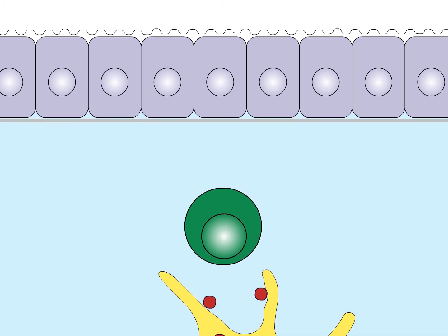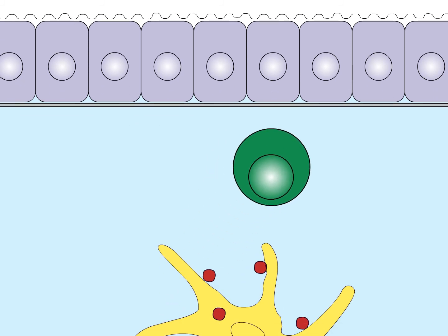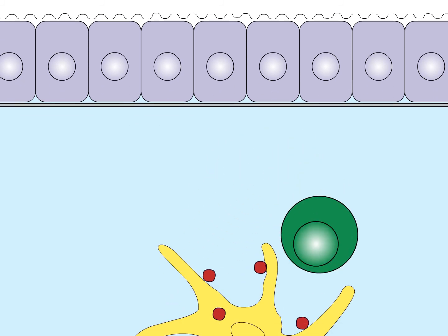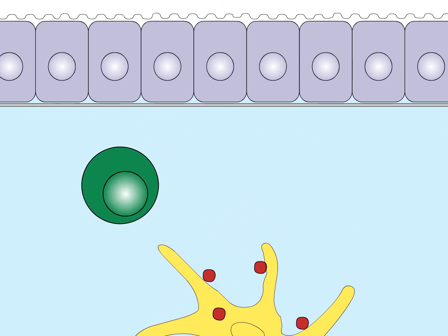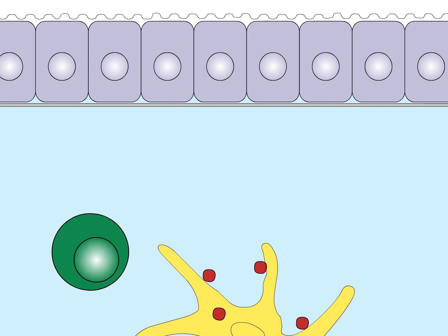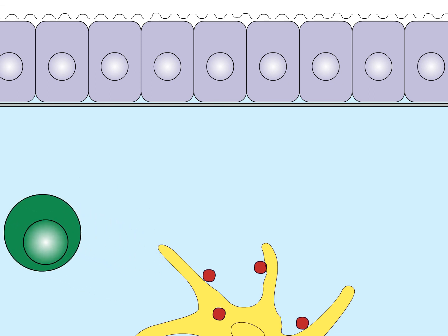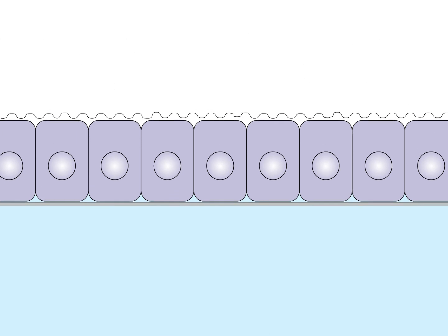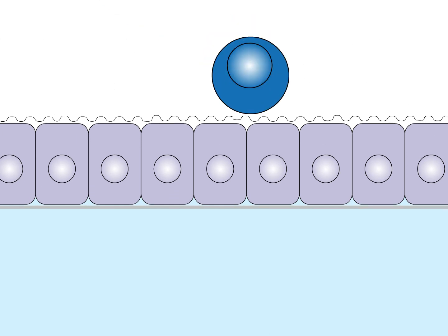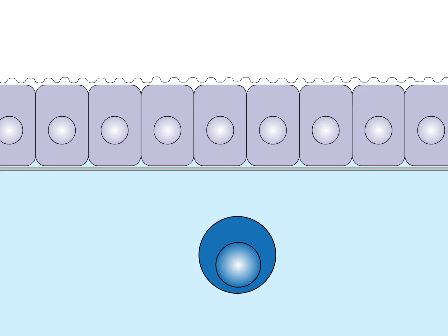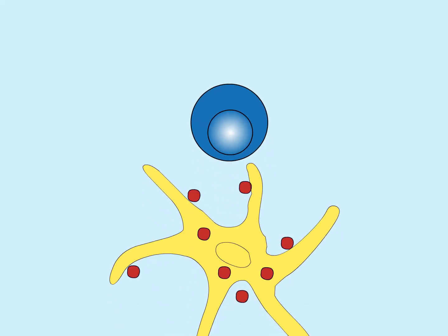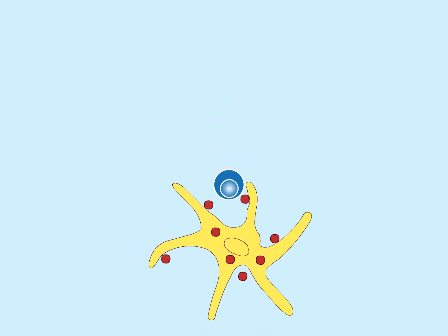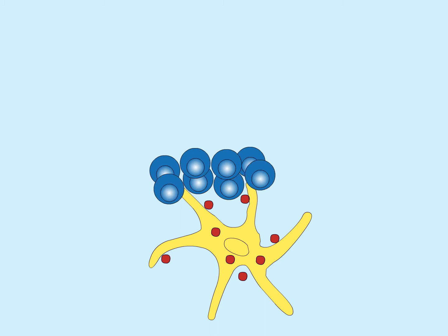The naive T cell can now inspect dendritic cells in the lymph node for the presence of its specific antigen. If it does not recognize antigen, the T cell is not activated and passes out of the lymph node to return to the circulation. T cells that do meet their specific antigen in the lymph node are activated and begin to proliferate and to mature into effector cells.